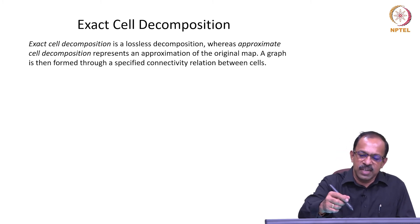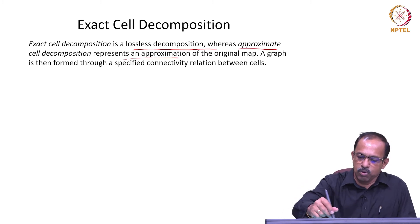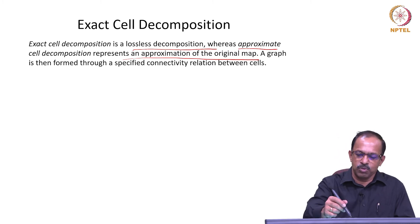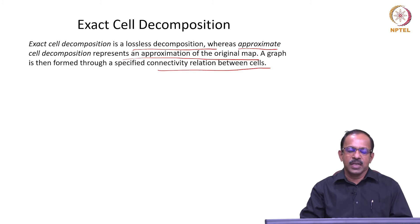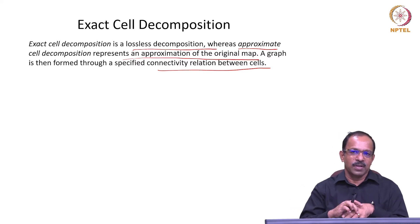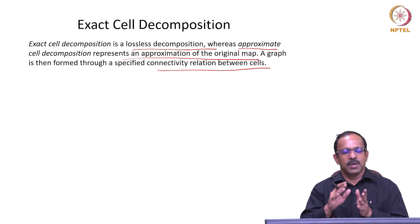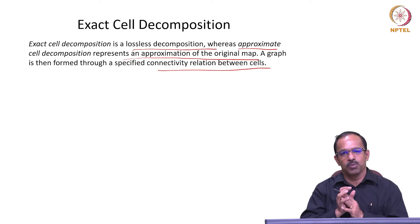In exact cell decomposition, it is a lossless decomposition, whereas approximate decomposition represents an approximation of the original map. A graph is then formed through a specified connectivity relation between cells. In exact cell decomposition, we make sure that cells are either completely occupied or completely unoccupied. But in approximate decomposition, there may be cells which are partially occupied and partially unoccupied as well — that is the difference between these two methods.